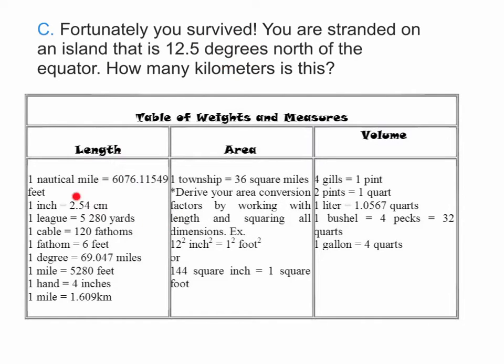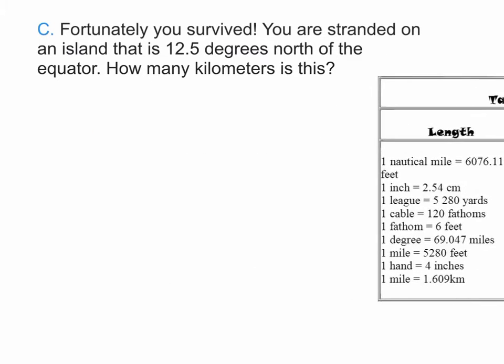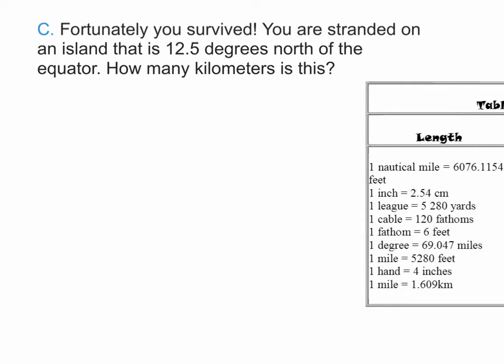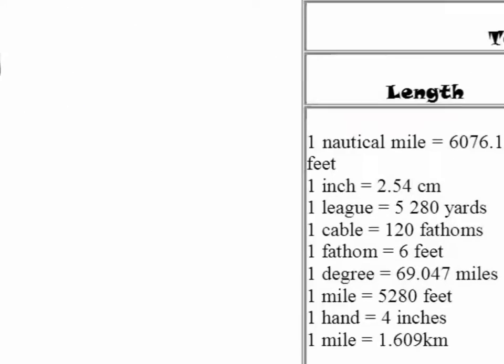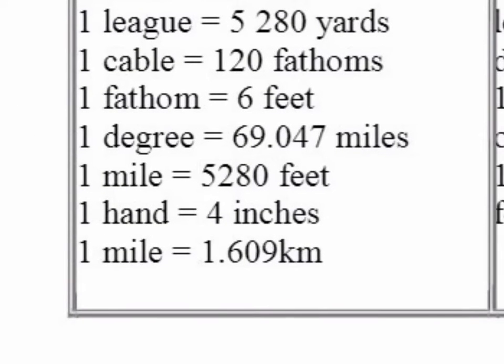Let's take a look at our table. We need to figure out are we using length, area, or volume? We're clearly going to be using length, so let's isolate this a little bit. When we're looking at length, we need to figure out what steps we're going to take to link 12.5 degrees to kilometers. Let's take a look. I know that we can have degrees right here. It says 1 degree is equivalent to what? 69.047 miles. Can we get from miles to kilometers?